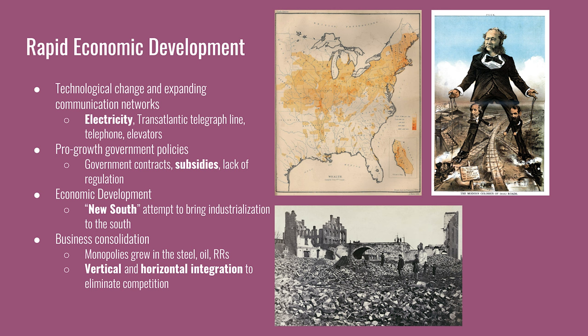Business consolidation means that companies are getting larger through buying and merging with competitors, making monopolies. In the steel, oil, and railroad industries, there are monopolies, and they consolidated through the process of vertical and horizontal integration. In vertical integration, they control every step of the process of making one product, while in horizontal integration they control the entire market share for one product or industry by buying up competitors.